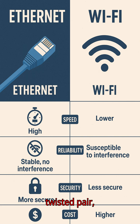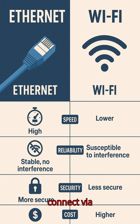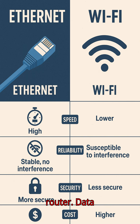The cables used can be twisted pair copper or fiber. Devices connect via Ethernet cables to a switch or router.